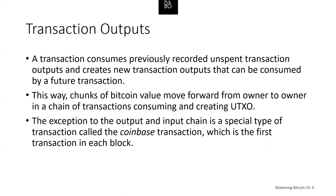The user's wallet typically selects from available UTXOs to compose an amount greater than or equal to the desired transaction amount. The Bitcoin wallet can use several strategies: combining smaller units, using exact change, or using a single larger unit and making change. All of this complex assembly of spendable UTXOs is done automatically by the wallet. A transaction consumes previously recorded unspent transaction outputs and creates new outputs that can be consumed by future transactions, moving chunks of Bitcoin value forward in a chain.